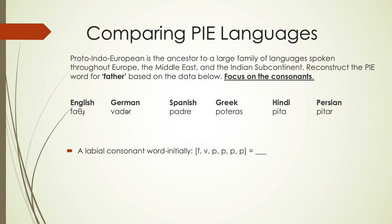We have a coronal sound as the next consonant in each example. In English, we have an interdental TH sound. In German there's a D. In Spanish there's a D. And in Greek, Hindi, and Persian we have a T sound. Looking through, the majority is T — three of them — with a few others that have changed. We still posit T as most likely. This is also because T is a voiceless sound occurring between vowels and voiced sounds, and it's much more common for a voiceless sound to become voiced between vowels rather than the other way around. So linguistic patterns also confirm T for the reconstructed earlier form.